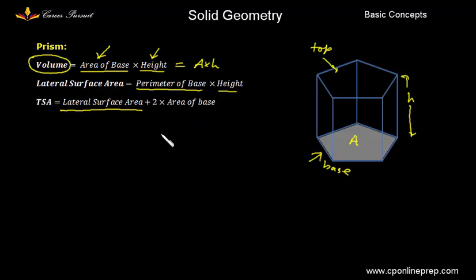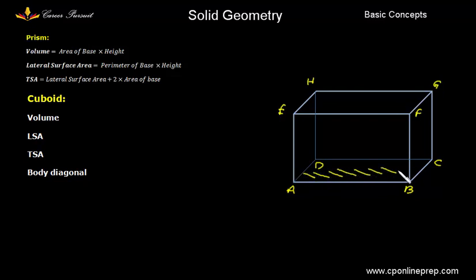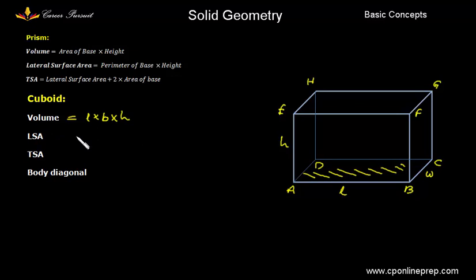Let us see the prisms — cube, cuboid and cylinder — one by one. For cuboid, say the vertices are A, B, C, D, E, F, G and H. The base ABCD is rectangular and the top is also rectangular. Volume will be area of base, where AB has length L, BC has width B, and AE is the height H. So volume is L into B into H — the formula for volume of a cuboid we have already learnt in school. Lateral surface area is perimeter of the base into height, which is 2(L + B) into H.